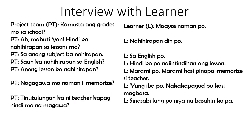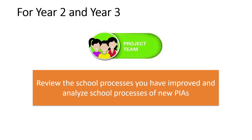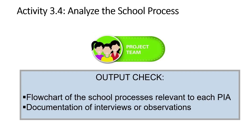You can actually do the interview with the learner — asking questions about how they are doing in school, which subject they find difficult, and whether the teacher helps them. You try to identify the storm clouds from those answers. You may pause the video to see more examples of storm clouds. For year two and three, review the school process you have improved and analyze the school process of the new priority improvement area. Outputs needed: flowchart of school processes relevant to each PIA, and documentation of interviews or observations.